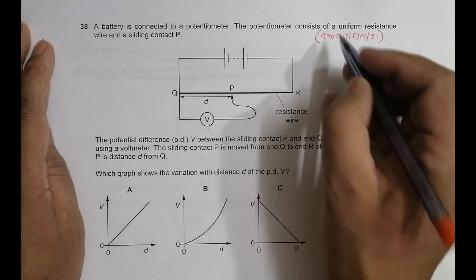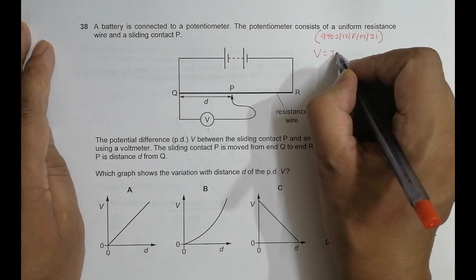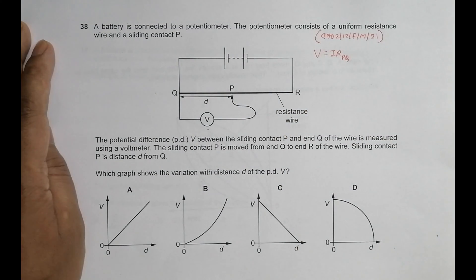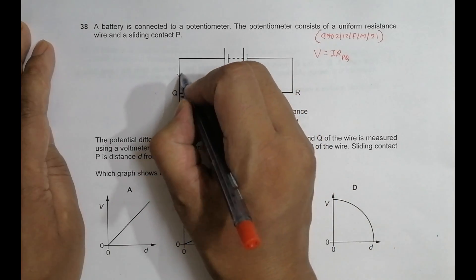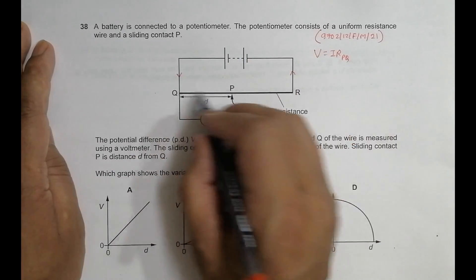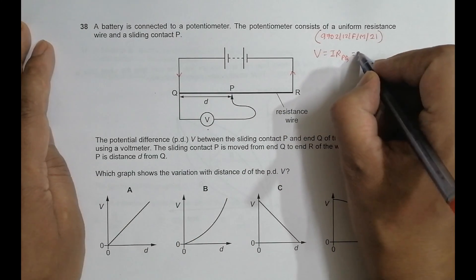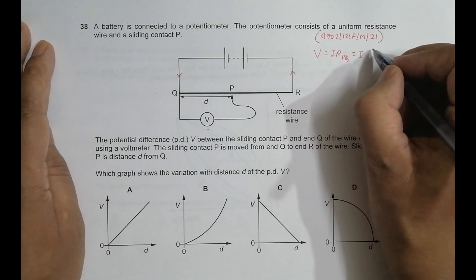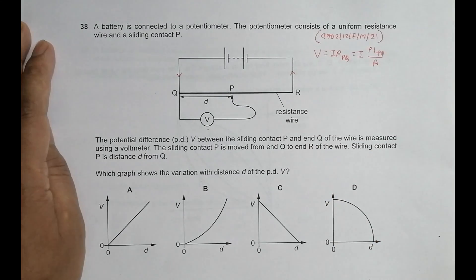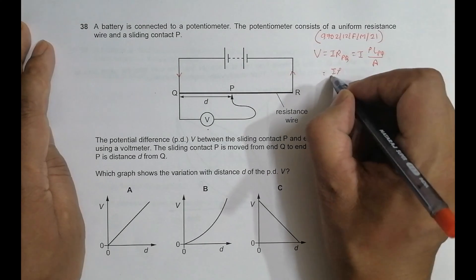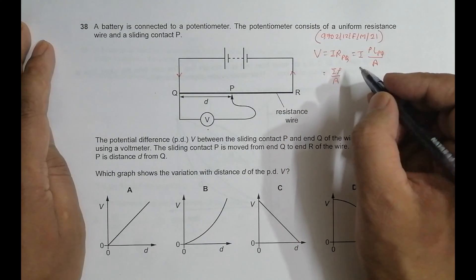So we have this PD is equal to V, which is equal to simply I into R_PQ, so simple Ohm's law. And in a potentiometer, the current here should be constant because nothing has changed, so current is constant. So we have current is constant, and R_PQ is equal to ρ into L_PQ divided by its cross-section, I into ρ L_PQ by A.